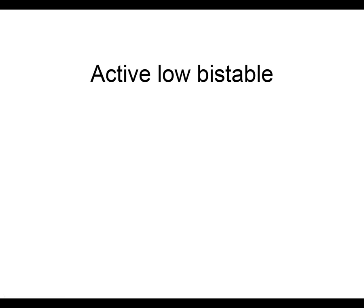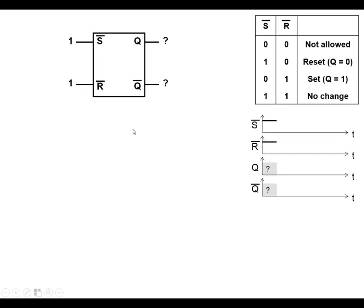The Active-Low Bistable symbol can be shown like this. We've got S-bar and R-bar as the inputs. The bars show that it's Active-Low — when these go low, it will set and reset the Bistable. And the outputs are Q and Q-bar.